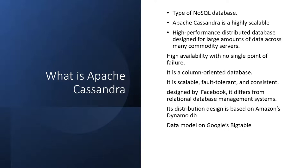Cassandra is fault tolerant — if one node goes down, the workload is taken over by the other nodes. It is consistent and was designed by Facebook. It is entirely different from RDBMS. In terms of distribution design, it is similar to AWS DynamoDB and Google's BigTable.